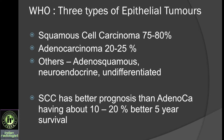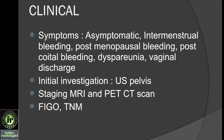Squamous cell carcinoma tends to arise in the squamous columnar junction, while adenocarcinoma arises in the ectocervix. The squamous columnar junction is in the ectocervix in younger patients, which regresses to the endocervical canal with age. Therefore, younger women tend to have an exophytic mass, whereas older women will have an endocervical lesion. Clinically, most of these women are asymptomatic or they might present with intermenstrual bleeding or postmenopausal bleeding and other non-specific symptoms.